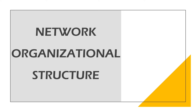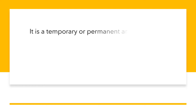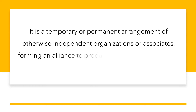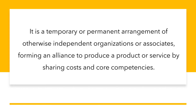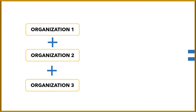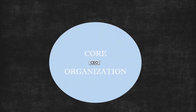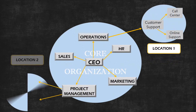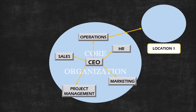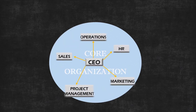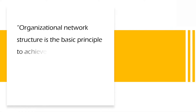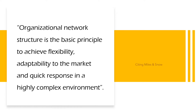Network Organizational Structure is a temporary or permanent arrangement of otherwise independent organizations or associates forming an alliance to produce a product or service by sharing cost and core competencies. More than one organization combines to produce a good or provide a service. The firm outsources or subcontracts many or most of its major processes to separate companies and coordinates their activities from a small headquarters organization. Miles and Snow stated that organizational network structure is the basic principle to achieve flexibility, adaptability to the market, and quick response in a highly complex environment.